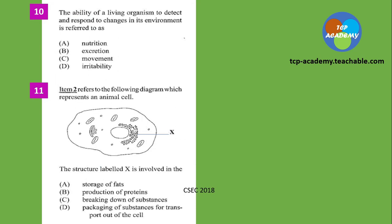Question number ten: the ability of a living organism to detect and respond to changes in its environment is referred to as A, B, C, or D. We've seen this question for the second time — this one is from the 2018 paper.